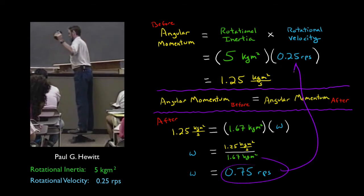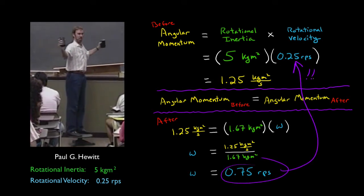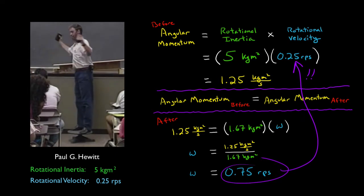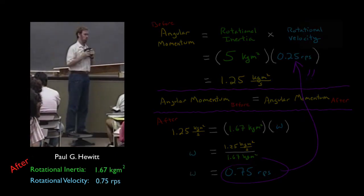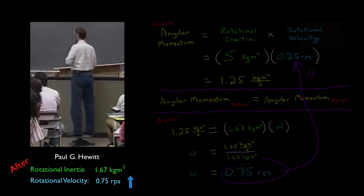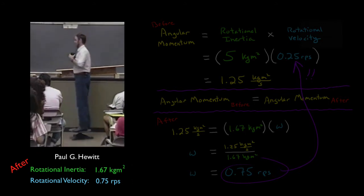That's three times faster than the original velocity. Let's see if that's what actually happens. Notice that while the rotational inertia goes down, that means the rotational velocity must go up, and proportionately so.